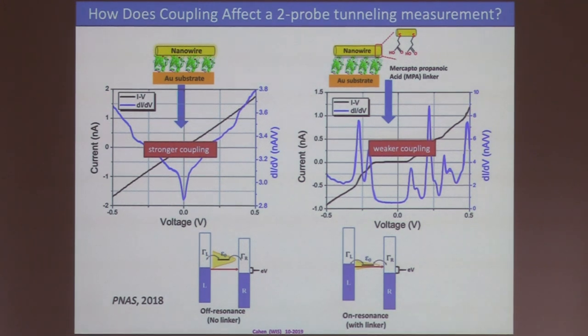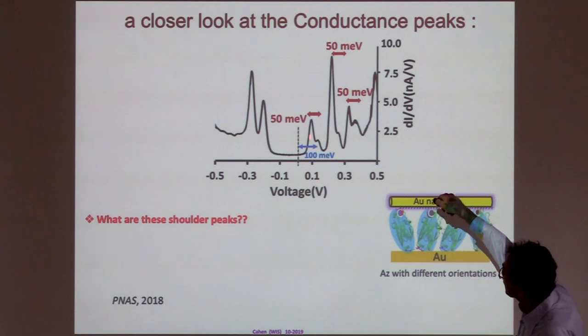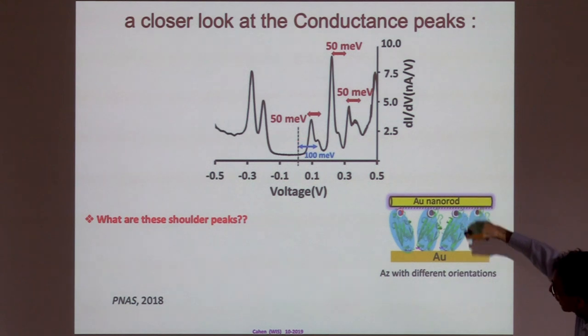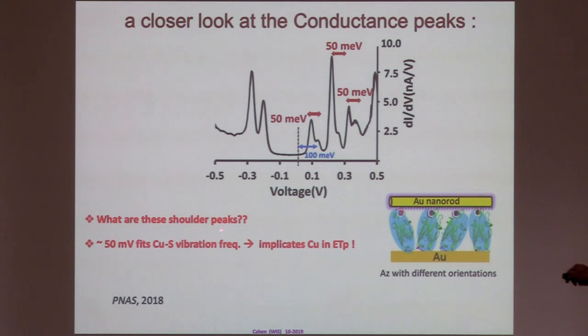And the striking effect, to explain it, you can look at the satellite peaks that many of these have. Now, first of all, why are there many of these peaks and they're not exactly symmetric around zero? Because I was misleading you by my cartoon. There will be quite a few of different orientations of this azurin. And azurin, I forgot to tell you, is stuck by a sulfur gold bond to the surface. So, this is fixed, but it can do this, it can do this. It has quite a bit of degrees of freedom. Now, what is this satellite? This satellite, 50 millivolts, fits very well to the copper sulfur vibration frequency. And that implicates copper in the electron transport.